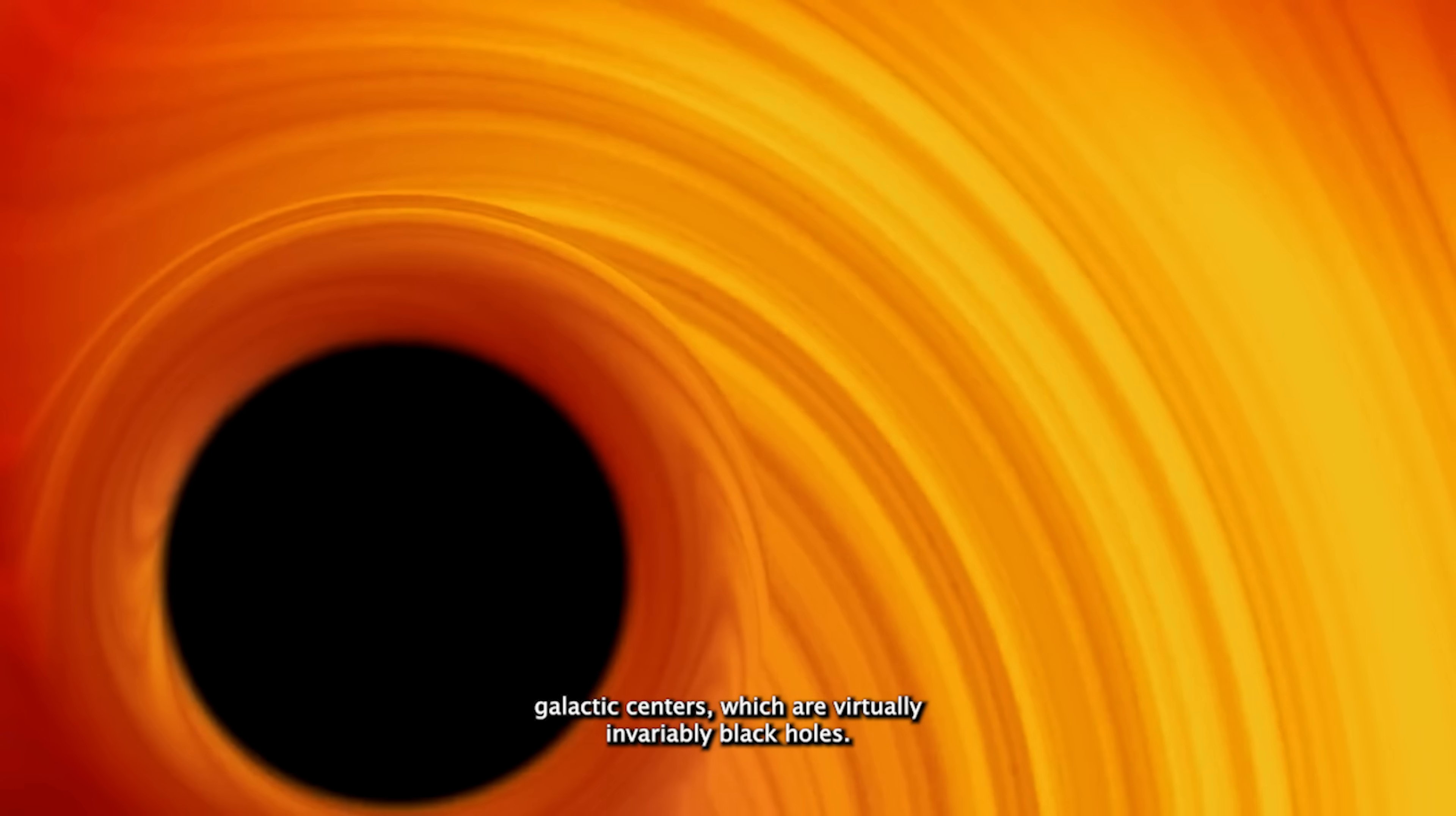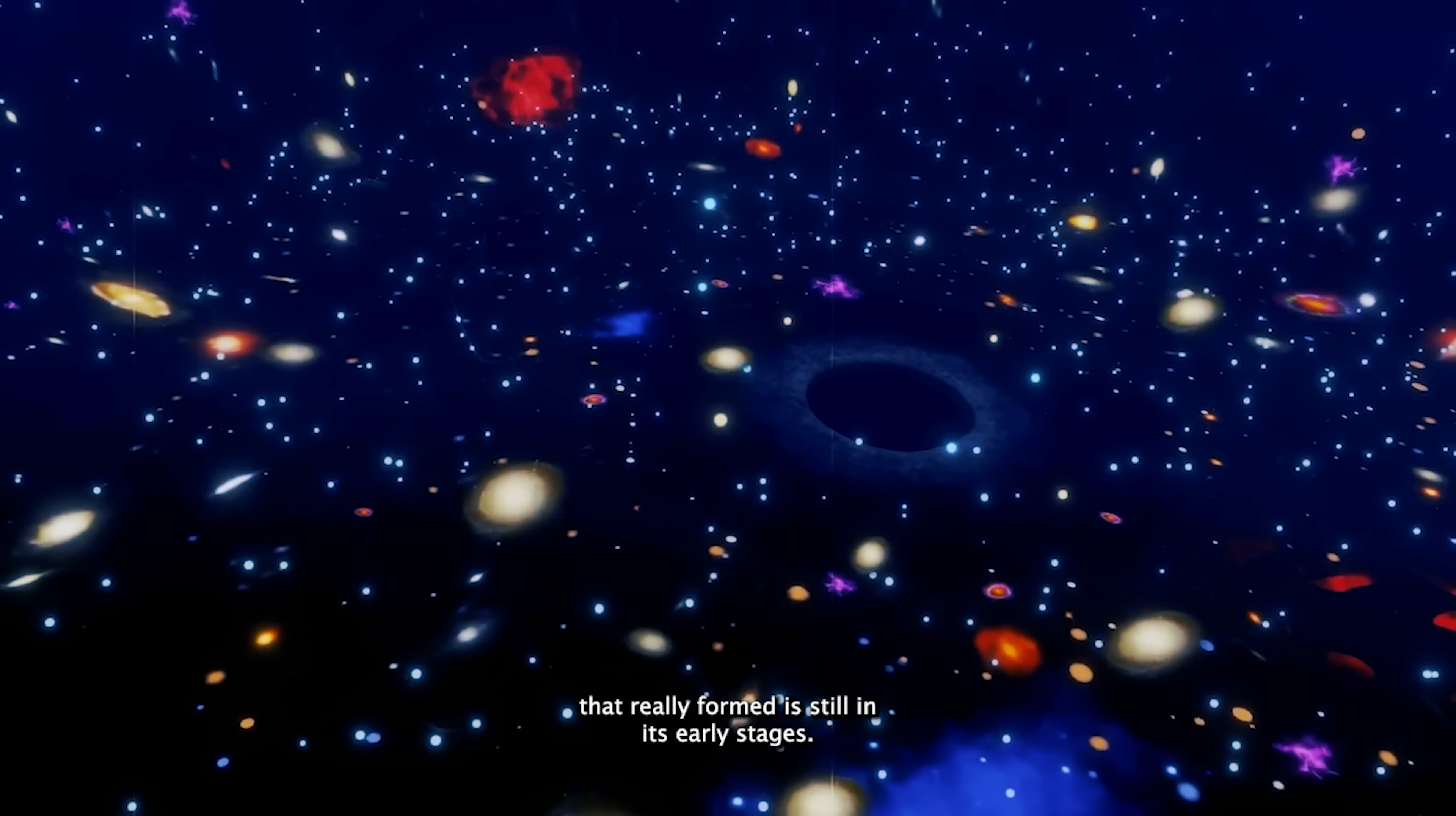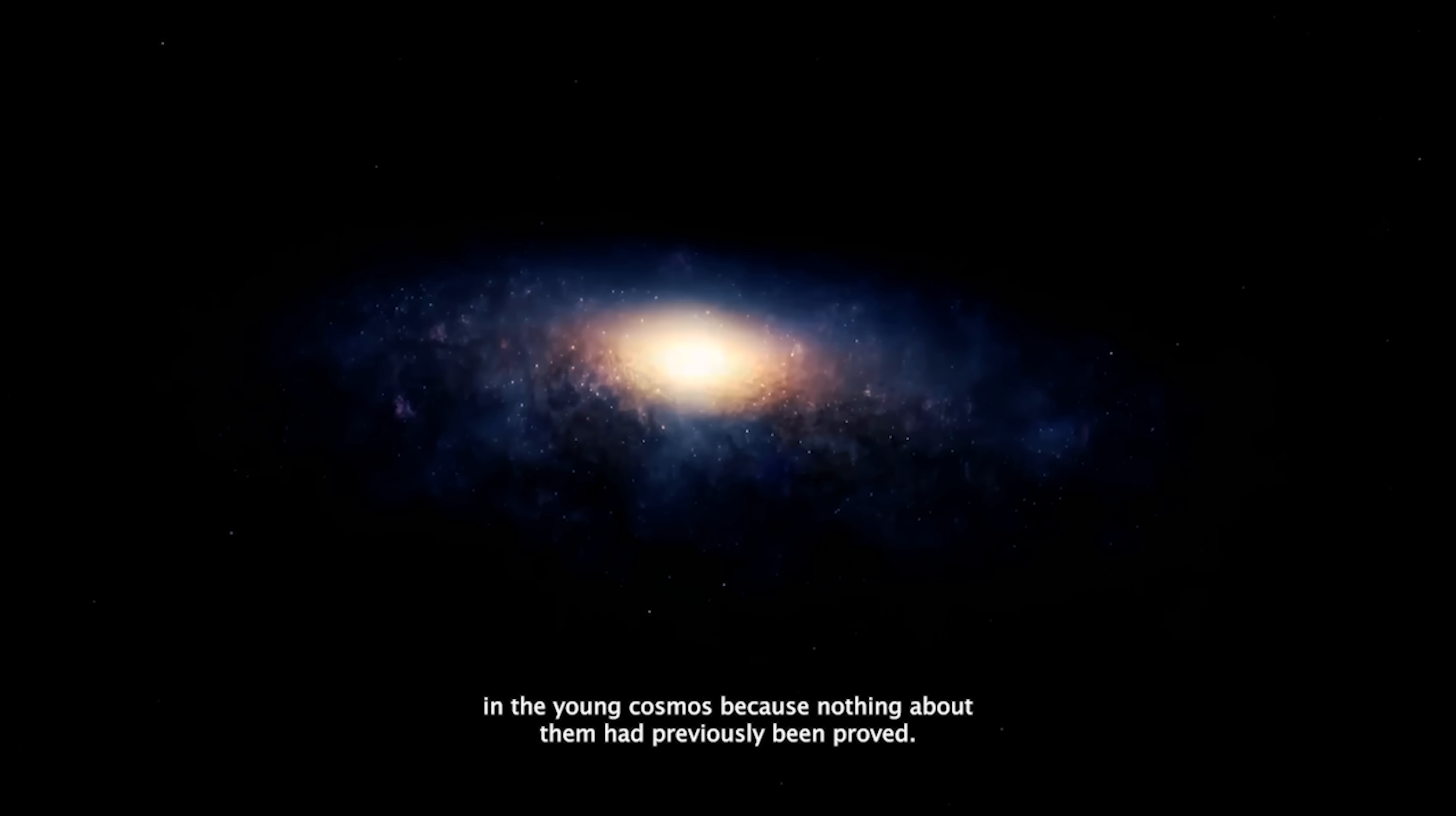Currently, billions of stars circle galactic centers, which are virtually invariably black holes. The extraordinary forms of spirals, disks, and spheres might be impacted by forces emitted by black holes, quasars, and their interactions. Research regarding the number of galaxies that really formed is still in its early stages. Researchers were particularly interested by the photographs of the first galaxies in the young cosmos, because nothing about them had previously been proved.